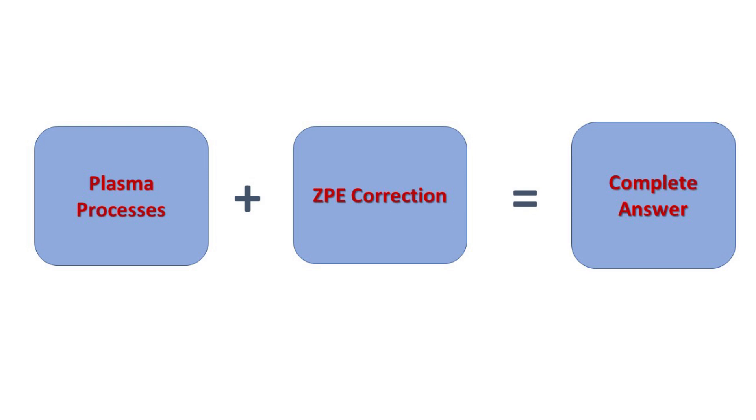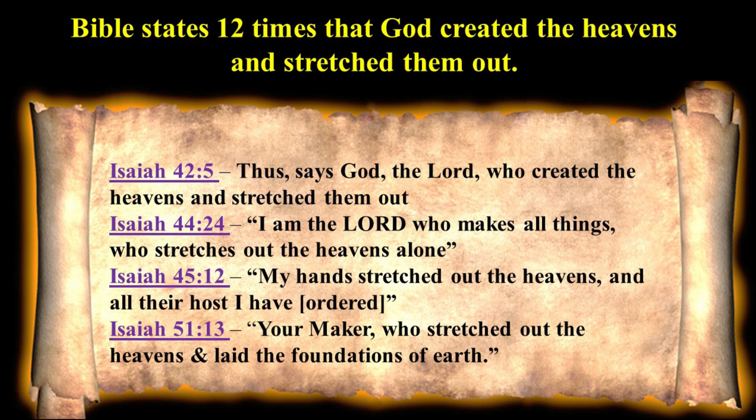Let us look at these items in more detail, beginning with the expansion or stretching of space. The Bible states twelve times that God created the heavens and stretched them out. These passages in Isaiah are typical. Isaiah 42:5 says, Thus says God the Lord, who created the heavens and stretched them out. Isaiah 44:24 I am the Lord, who makes all things, who stretches out the heavens alone. Isaiah 45:12 My hands stretched out the heavens, and all their host I have ordered. Isaiah 51:13 Your Maker, who stretched out the heavens and laid the foundations of the earth.